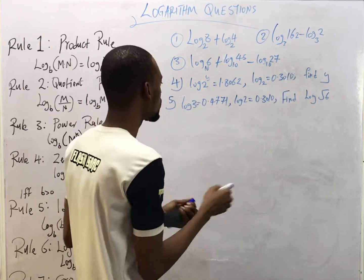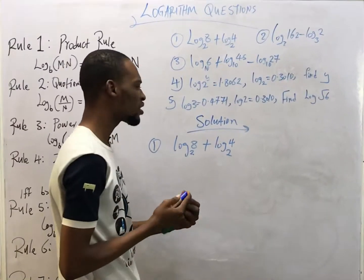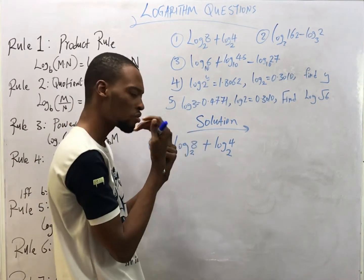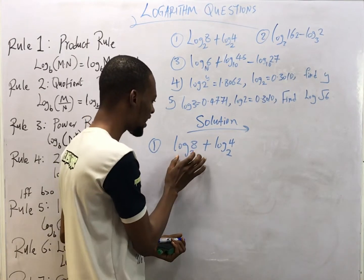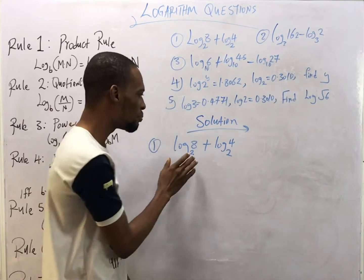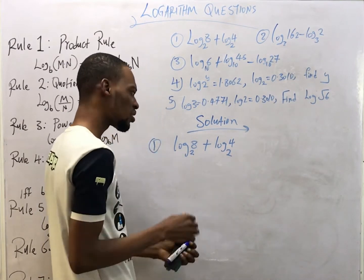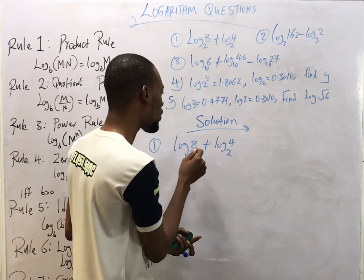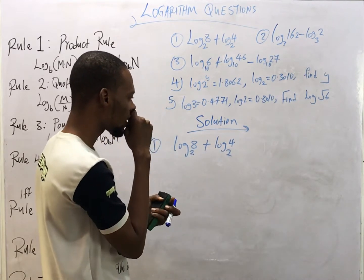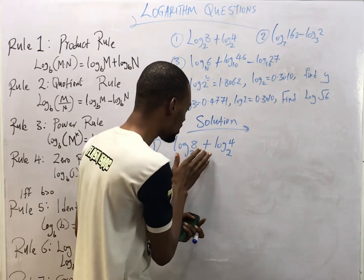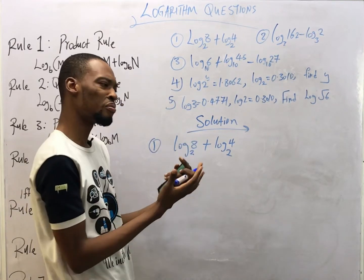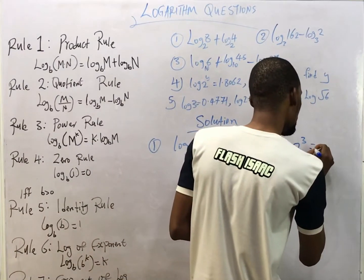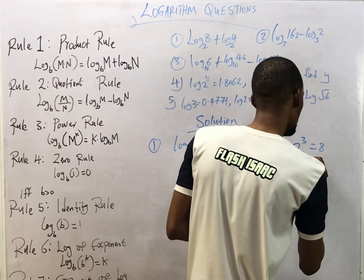Now let's look at these questions. Logarithm questions require wisdom — you look at what do I do to simplify this, what do I do to evaluate this. The first thing I notice in this question is that the bases are the same, so we have to look for something to make it simpler. Another thing I see here is that it is addition, so multiplication is possible. Now, 2 raised to the power of 3 equals 8, and 2 raised to the power of 2 equals 4.